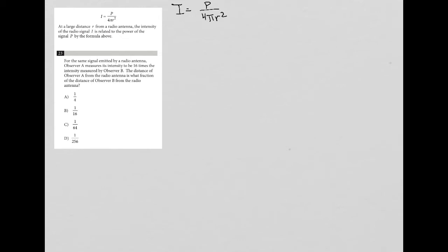Question number 23 looks like it's going to be a word problem, so I want to pay very close attention to the wording here. For the same signal emitted by a radio antenna, observer A measures its intensity to be 16 times the intensity measured by observer B.